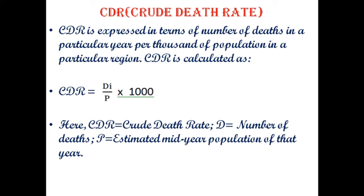CDR stands for Crude Death Rate. It is expressed as the number of deaths in a particular year per thousand of population in a particular area. It is calculated by this formula: D divided by P, multiplied by 1000. D stands for number of deaths and P stands for estimated mid-year population of that year.